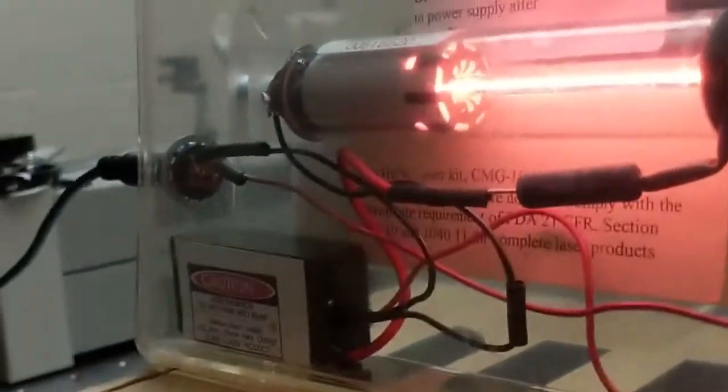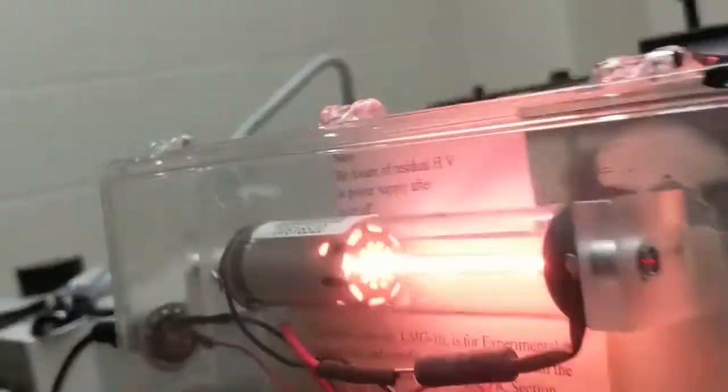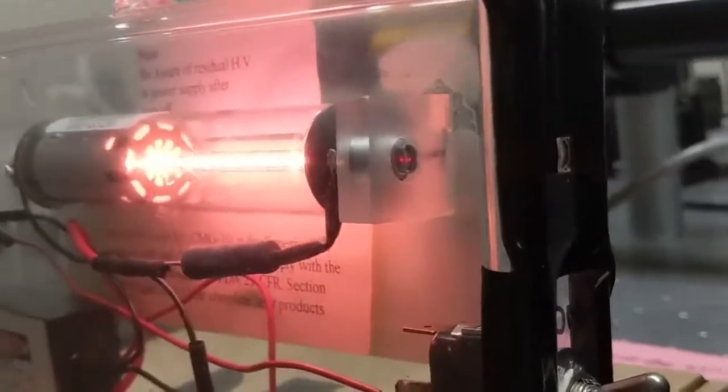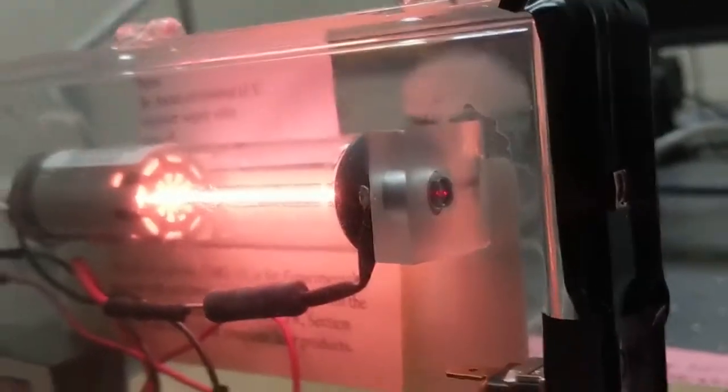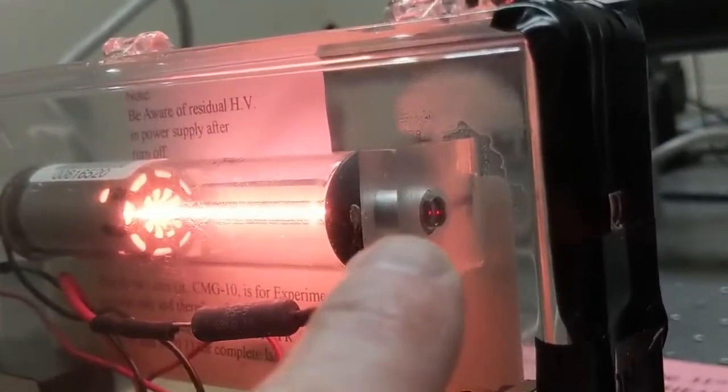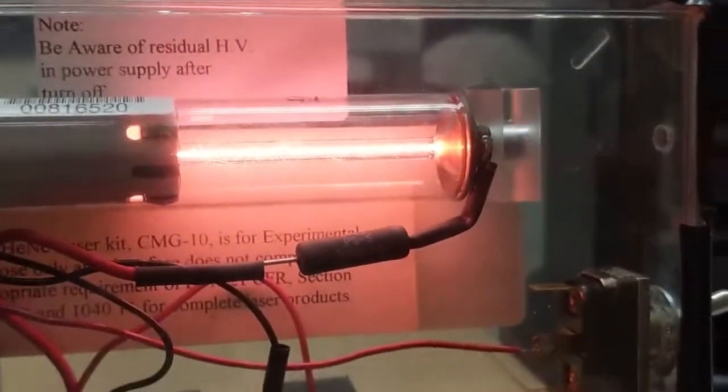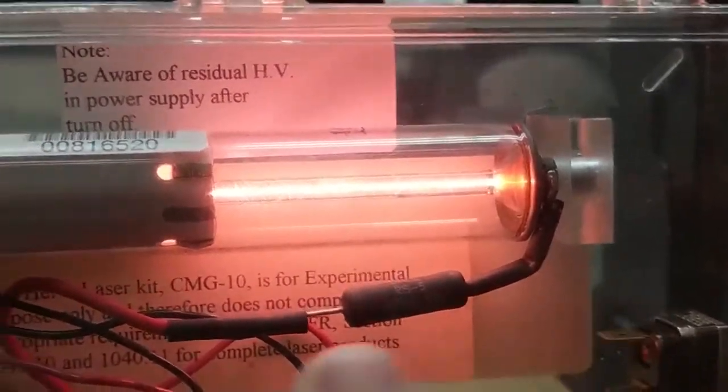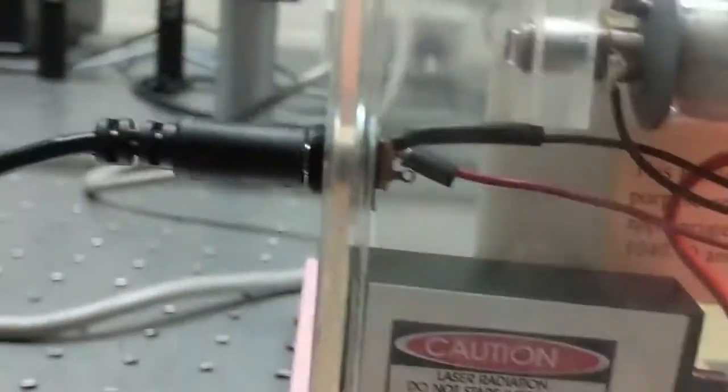And then, let me move this so we can see a little better. The thing that you can see the red dot on right there, that's the mirror on this end. So those mirrors are separate from the tube, but they're carefully aligned to be perpendicular to one another.